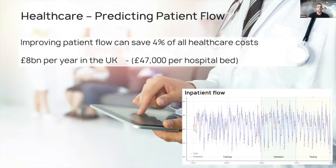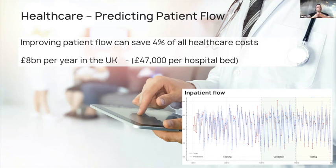We went to healthcare and wanted to understand how causal AI could help there. We took one very important problem during the pandemic: patient flow — how many people are going to turn up to hospital today and what services will they need? We found that moving from machine learning to causal AI allowed us to improve patient flow and therefore save 4% of all healthcare costs — that is 8 billion dollars per year of potential savings if we were to roll this out beyond the proof of concept.